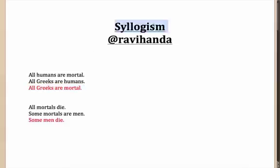The questions on Syllogism can be divided into two categories: the ones which are easy and the ones which are difficult. In the easy questions, what you can do is just look at the common part, eliminate it, and get the answer. In the first example, the common part is humans. If I eliminate humans, what I am left with is all Greeks are mortal, which is the conclusion. That means my conclusion is true.